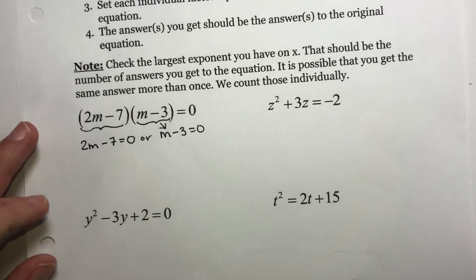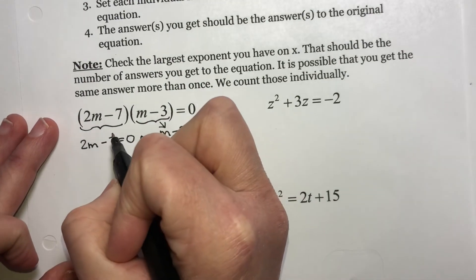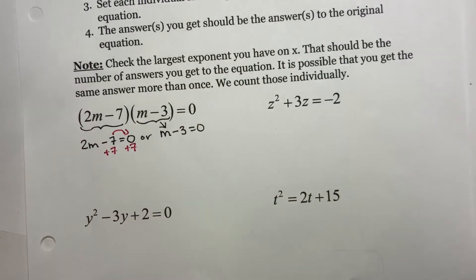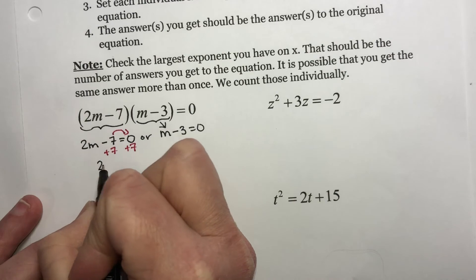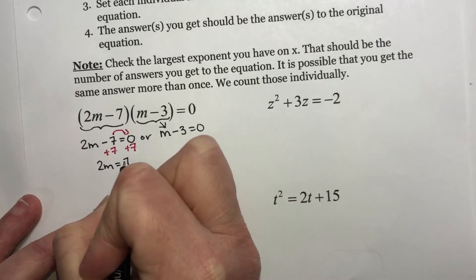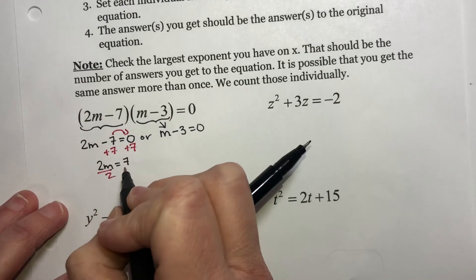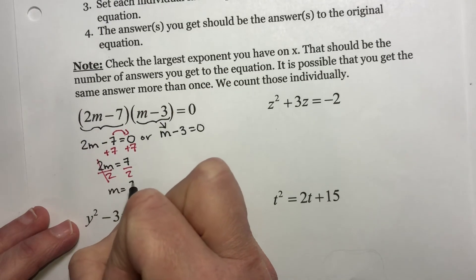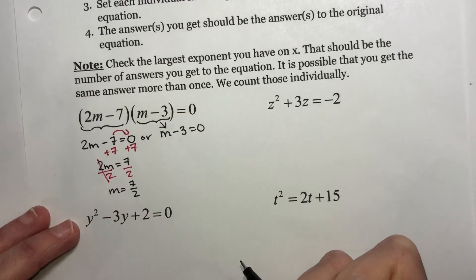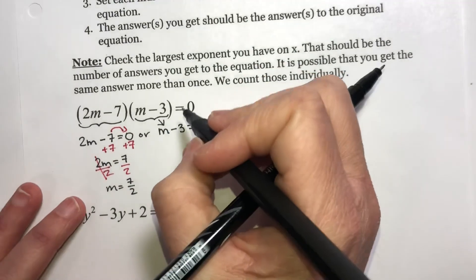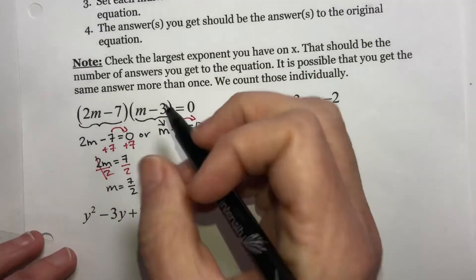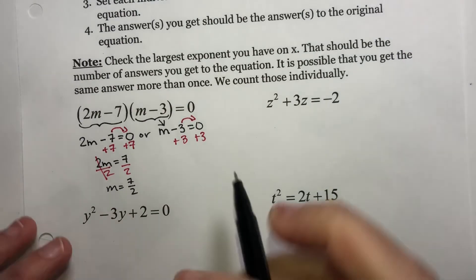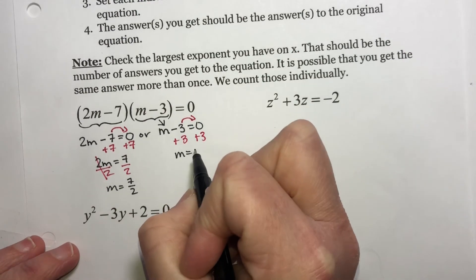So now we have two little simple equations to solve. I need to move this 7 over here. Let's add 7 to both sides. We get 2m = 7. Divide both sides by 2, and one of my answers is 7/2. For this one, move this over to here by adding 3 to both sides. And we get m = 3.